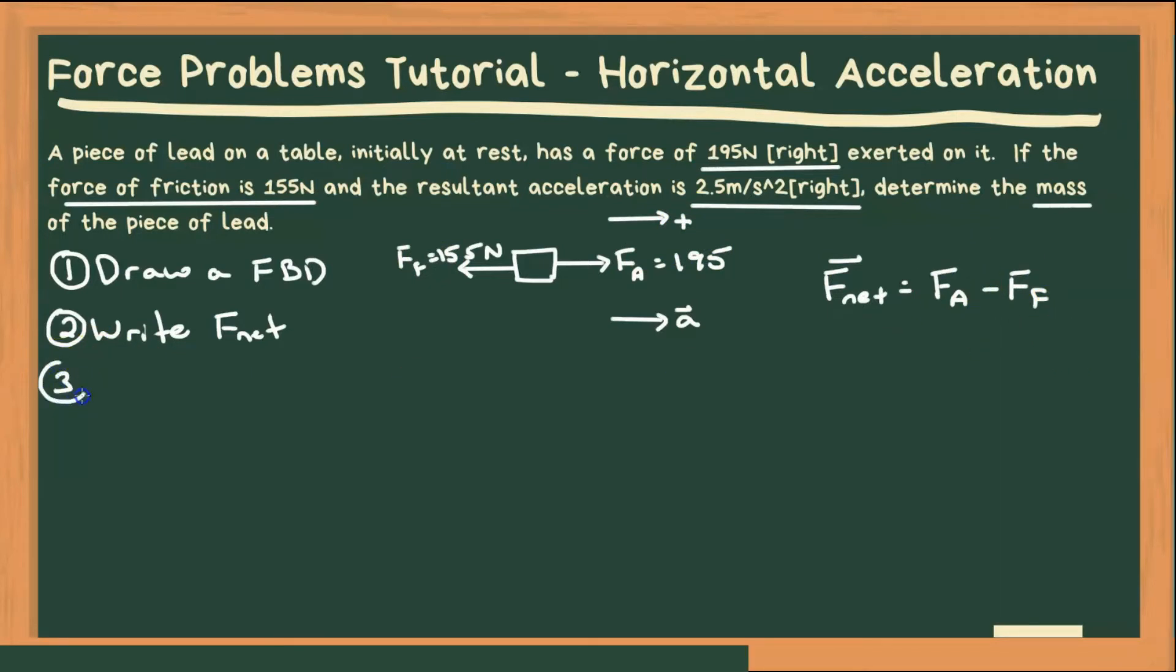Step three. Write out Newton's second law, which means to change F net equal to mass times acceleration. So I'm going to replace F net with mass times acceleration. And that is still going to equal our applied force minus our frictional force.